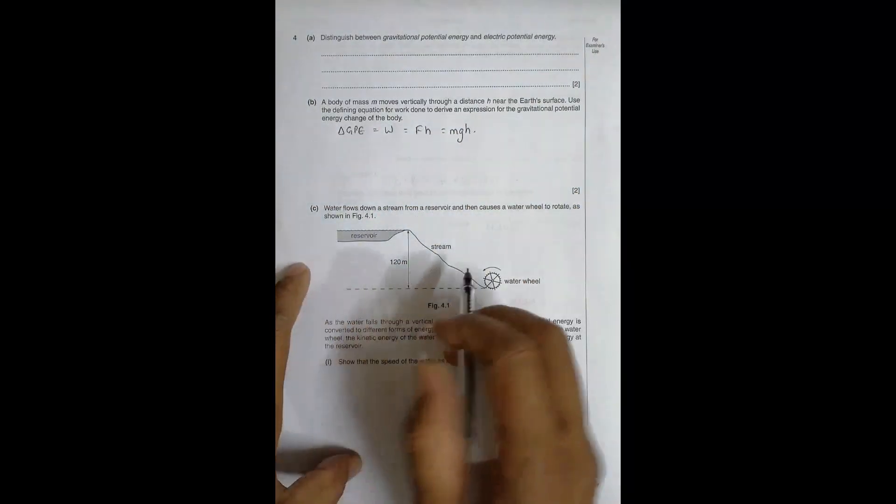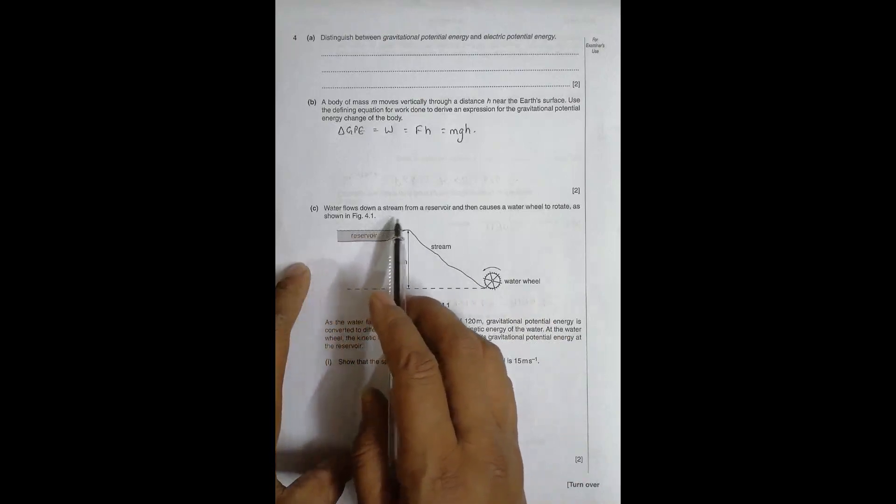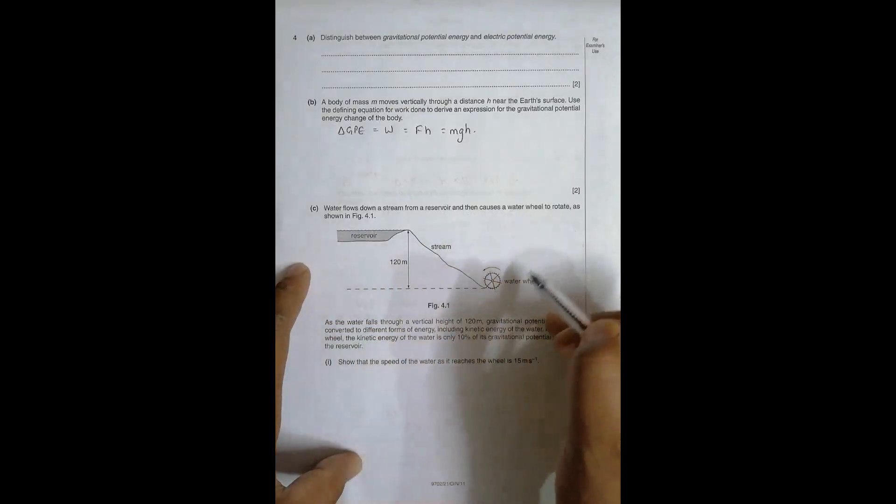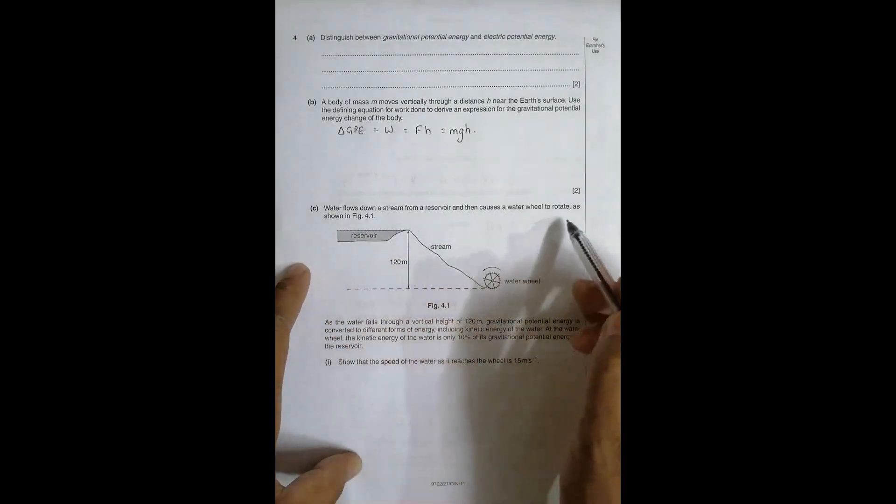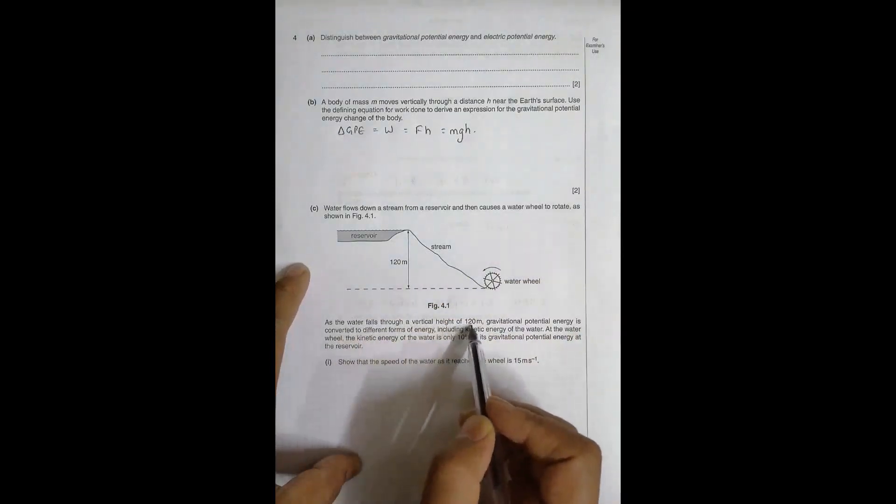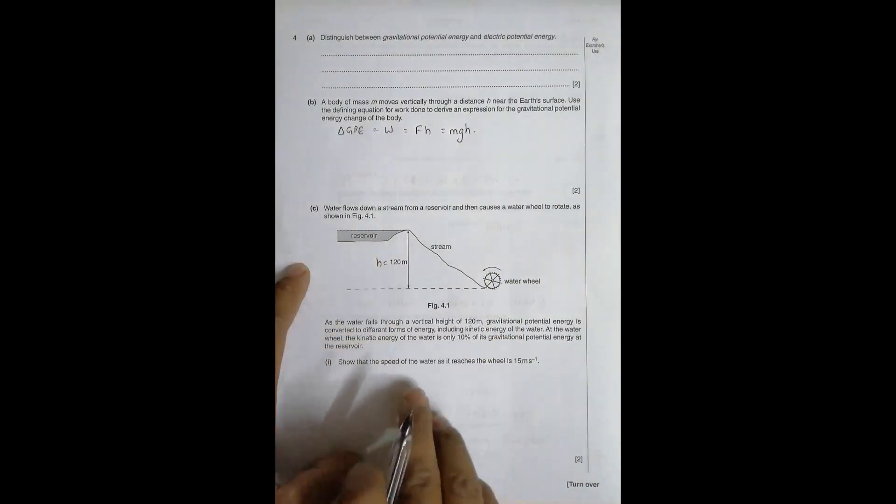Now in number c, we are given a situation in which water flows down a stream from a reservoir and then causes a water wheel to rotate. So water flows through here and it goes through like this. Actually in figure of 4.1, as the water falls through a vertical height of 120 meters, so h is equal to 120 meters.